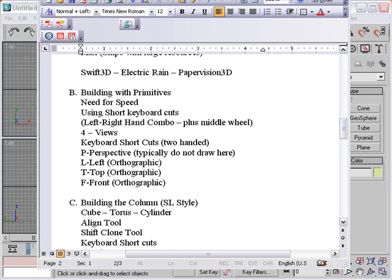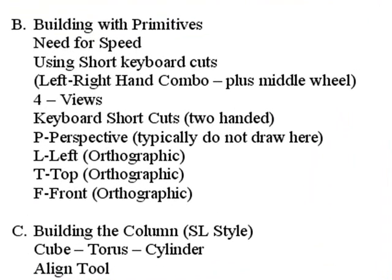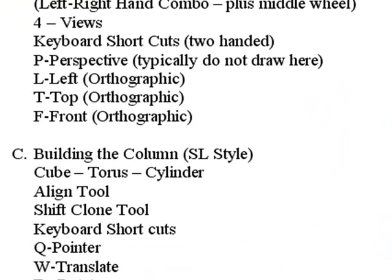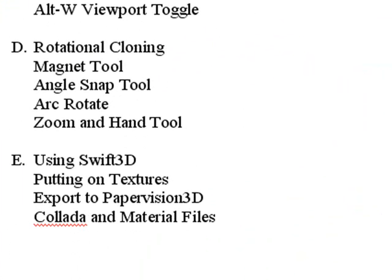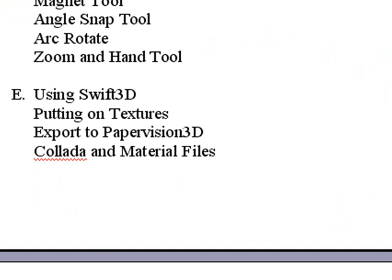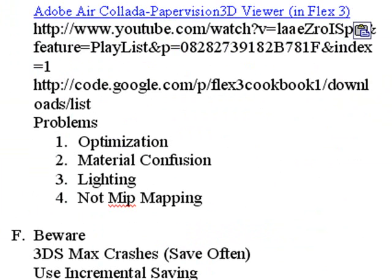Let me give you an overview of what we're going to cover in building with primitives. We're going to talk about the importance of shortcut keys and building with speed. We're going to build a simple column and show rotational cloning. Then we're going to use Swift 3D to bring that into Paper Vision, and talk about some of the problems with Swift 3D regarding optimization, lighting, and mapping.